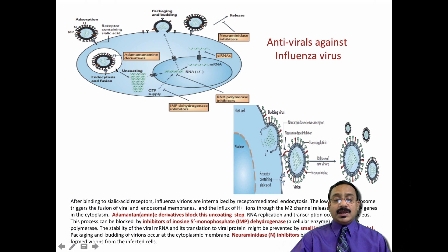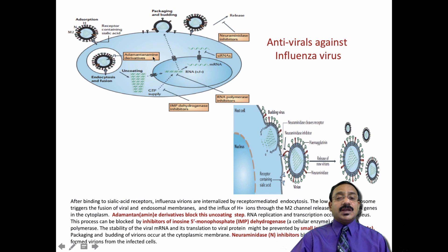There is uncoating and a release of RNA into the cytoplasm. The first intervention to stop influenza virus is the derivatives called adamantane. These derivatives can stop the endosomal release - once the virus uncoats and exposes the naked nucleic acid material, which is RNA, it travels from the cytoplasm to the nucleus.